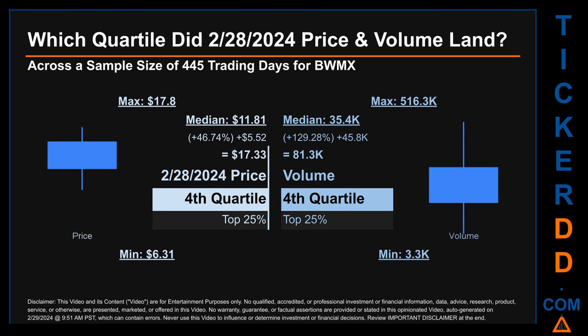Daily volume saw a max of 516,300 and a minimum of 3,300. Quartiles tell us about the spread of a data set by breaking that data set into quarters, just like how the median breaks the set in half. Descriptively, BWMX has a median price of $11.81; therefore, February 28th, 2024's price was higher from that middle marker by 46.74%. The day's volume of 81,300 was more than the median by 129.28%.